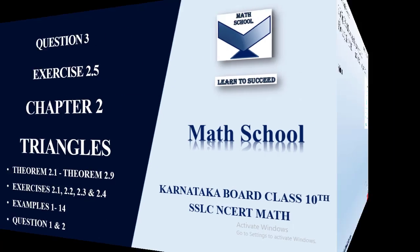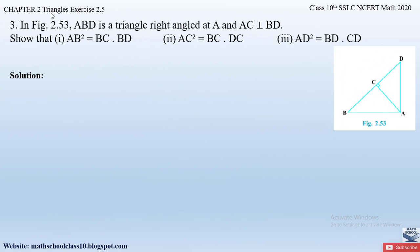So now let us begin with the video. Question number 3 from exercise 2.5, chapter 2 Triangles says: in figure 2.53, ABD is a triangle right-angled at A and AC is perpendicular to BD. Show that: AB² = BC·BD, AC² = BC·DC, and AD² = BD·CD.